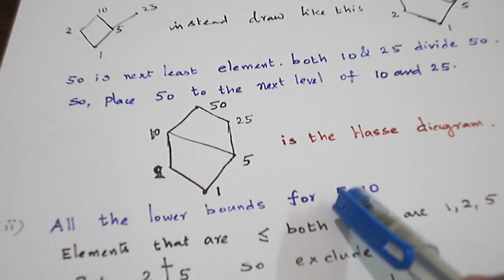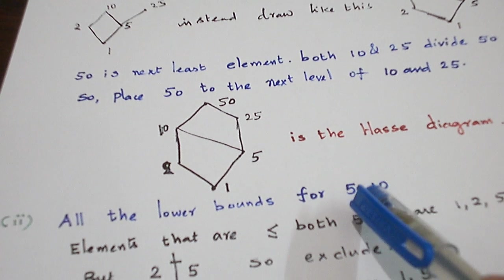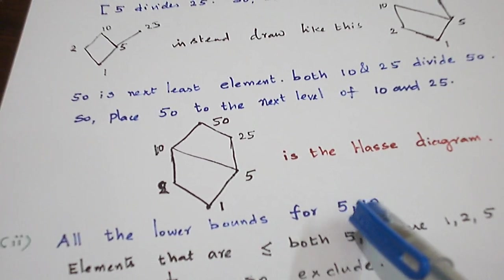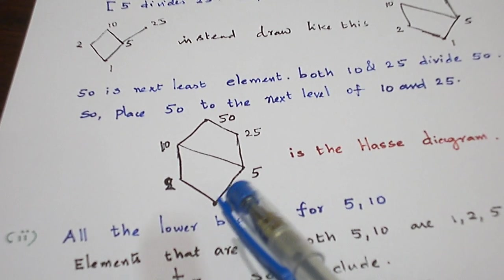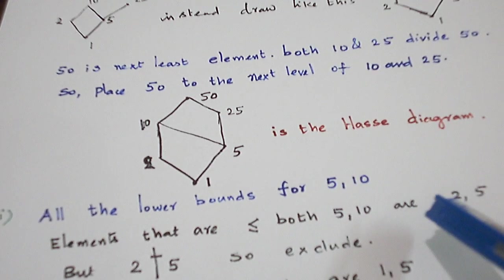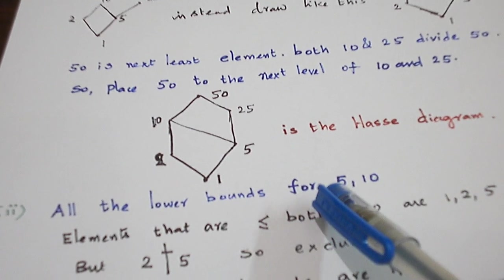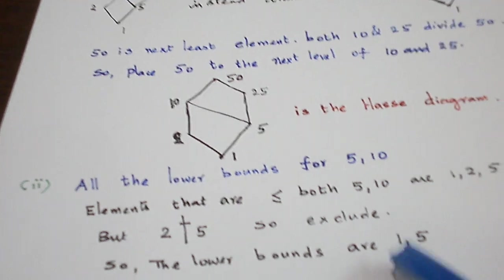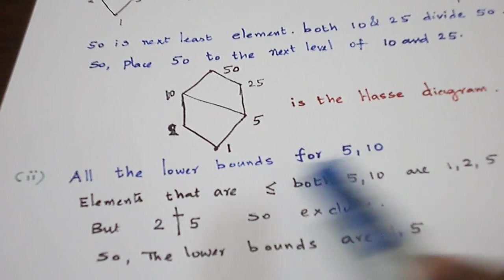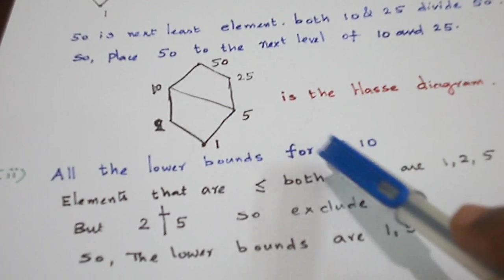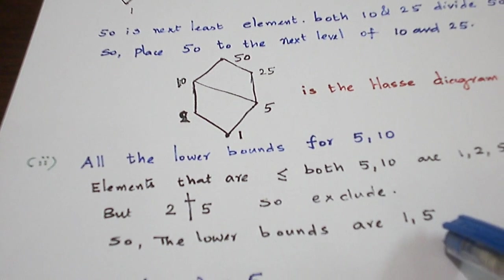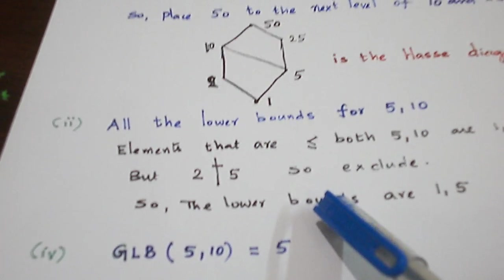Now let us write all the lower bounds for the elements 5 and 10. List out all elements that are less than or equal to both 5 and 10: those are 1, 2, and 5. Of these, 1 divides both 5 and 10, so it is a lower bound. 2 divides 10 but does not divide 5, so exclude it. 5 divides 5 and 5 divides 10, so that is also a lower bound. Therefore 1 and 5 are the lower bounds for {5, 10}.